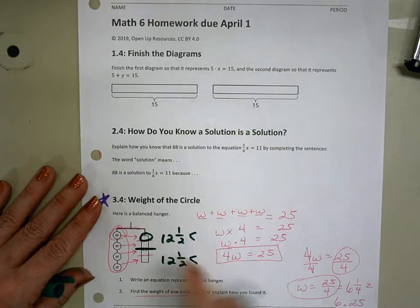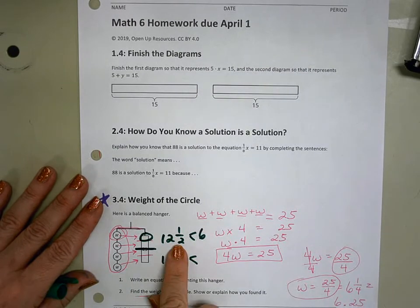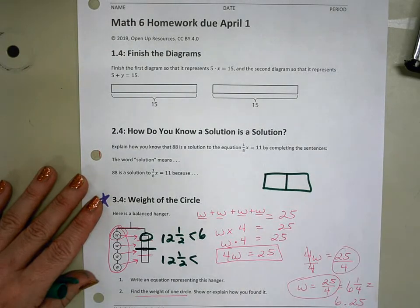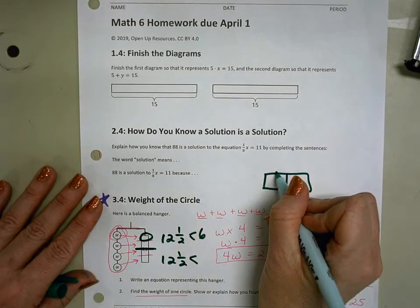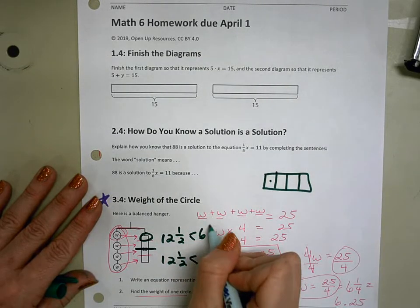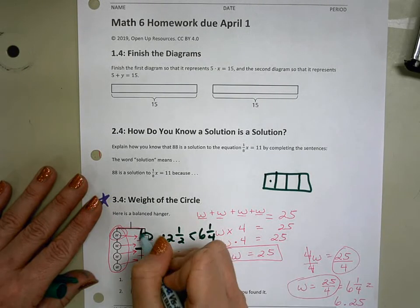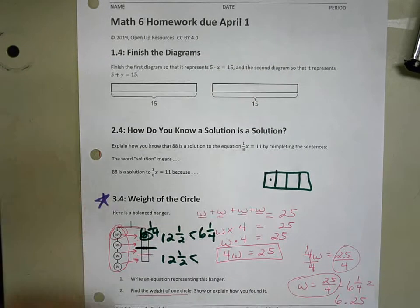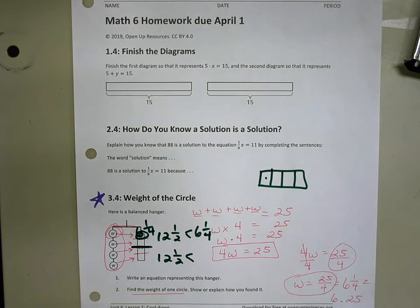Well, half of 12 is six. And half of one half. Here's my one whole. Here's my one half. Half of that is going to give me one fourth. So maybe you use the diagram to show that it's six and one fourth. Maybe you use your equation to show that it's six and one fourth or any of its equivalent values.